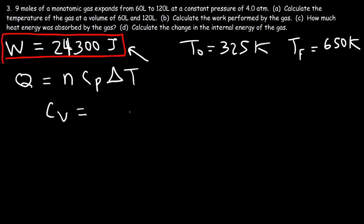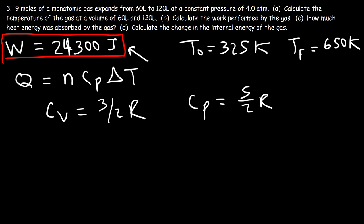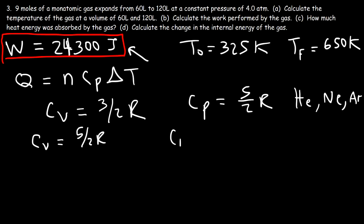For a monatomic gas, Cv = (3/2)R and Cp = (5/2)R. Cp always equals Cv + R. Monatomic gases include helium, neon, and argon — typically the noble gases. For diatomic gases like H₂, N₂, and O₂, Cv = (5/2)R and Cp = (7/2)R.